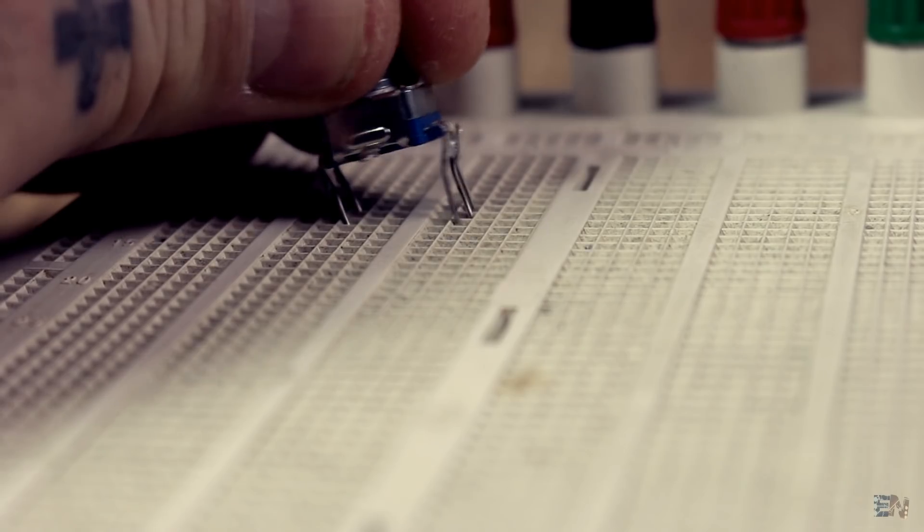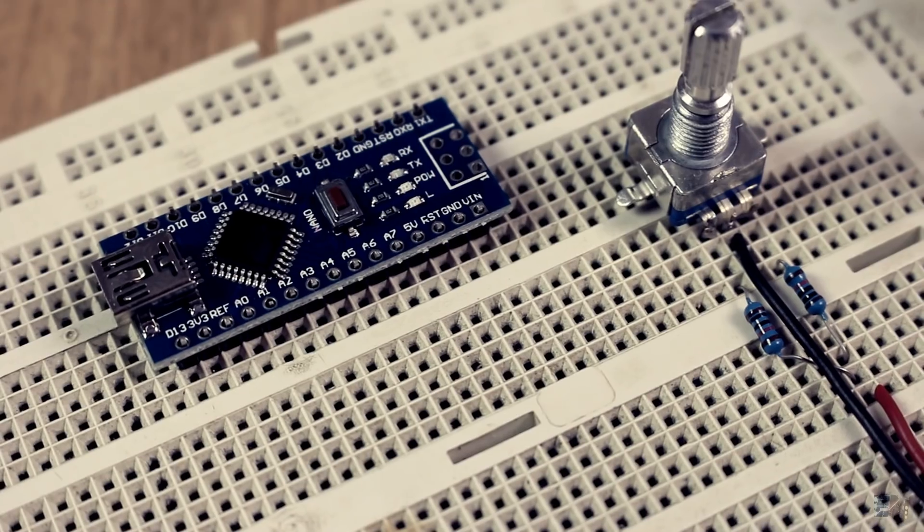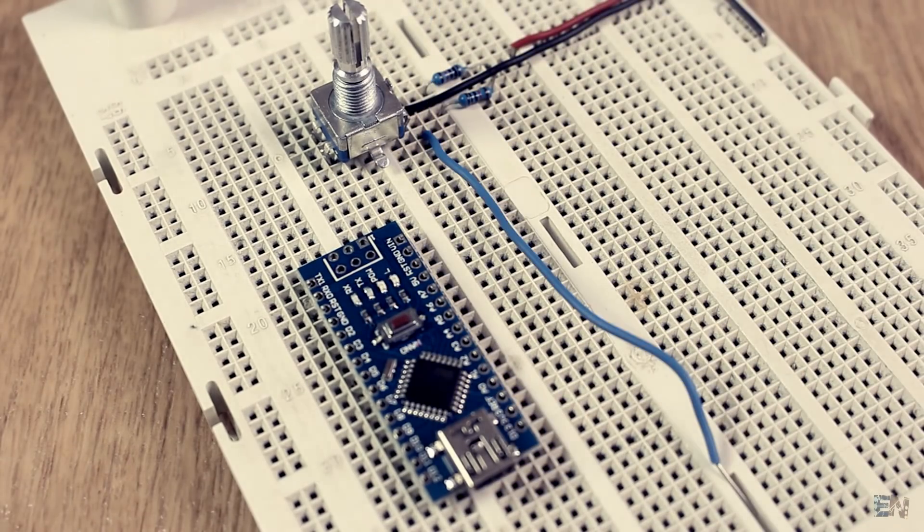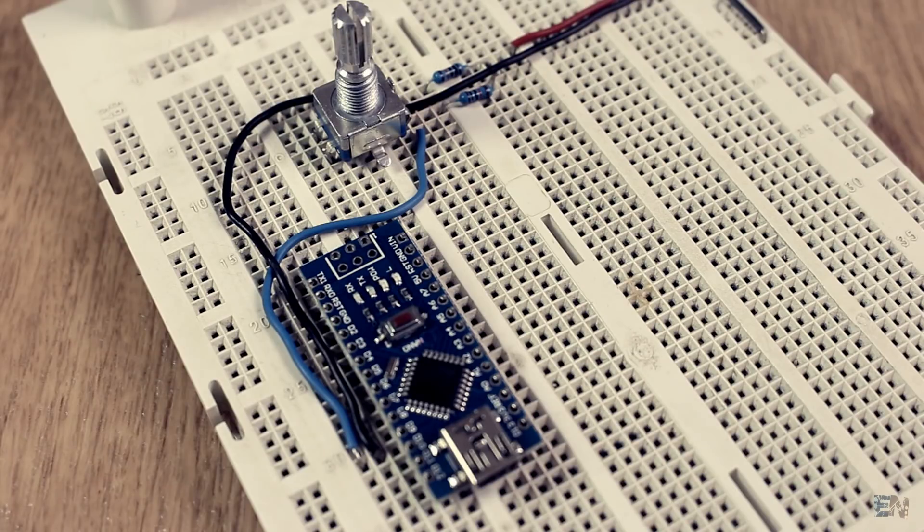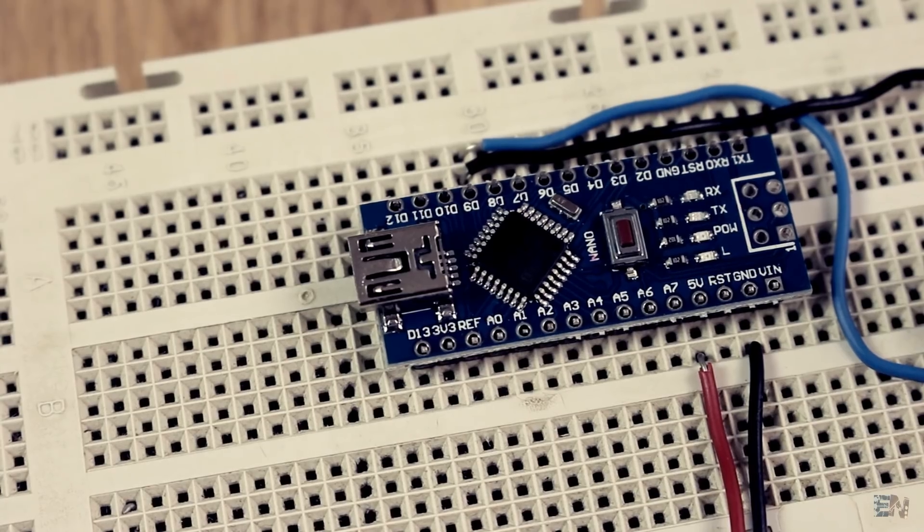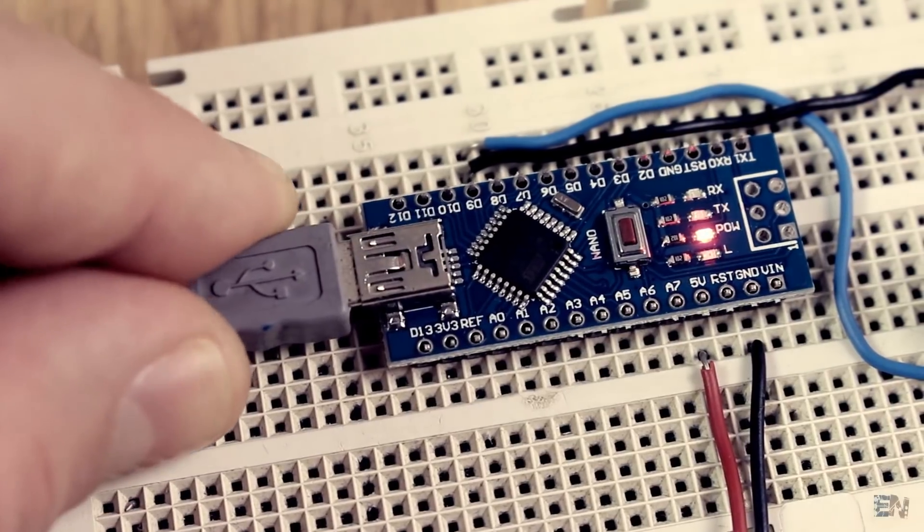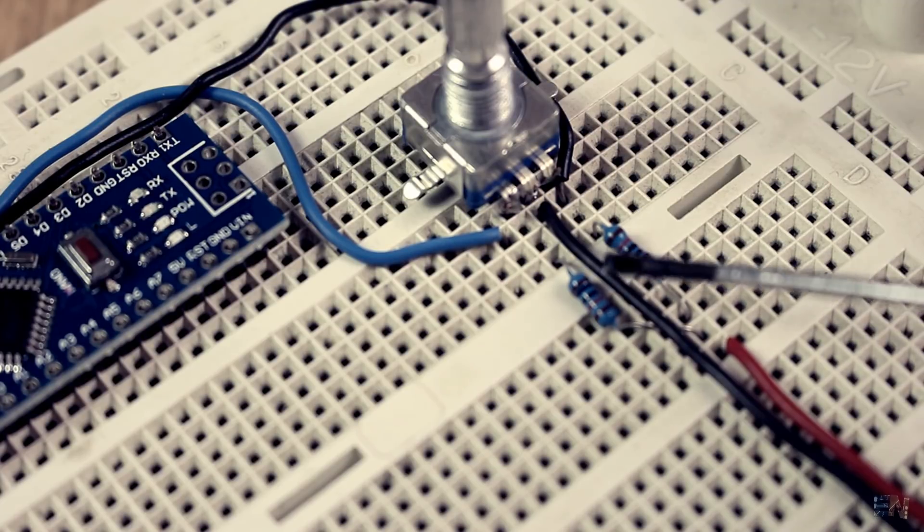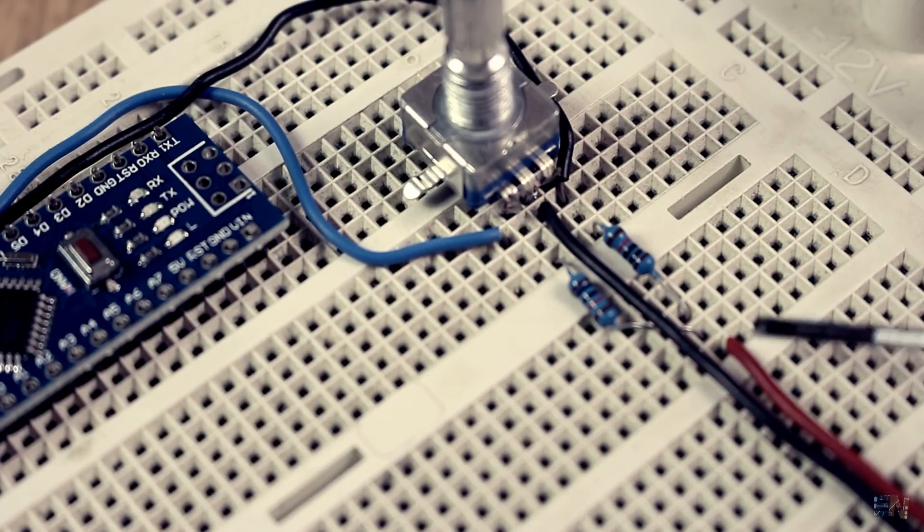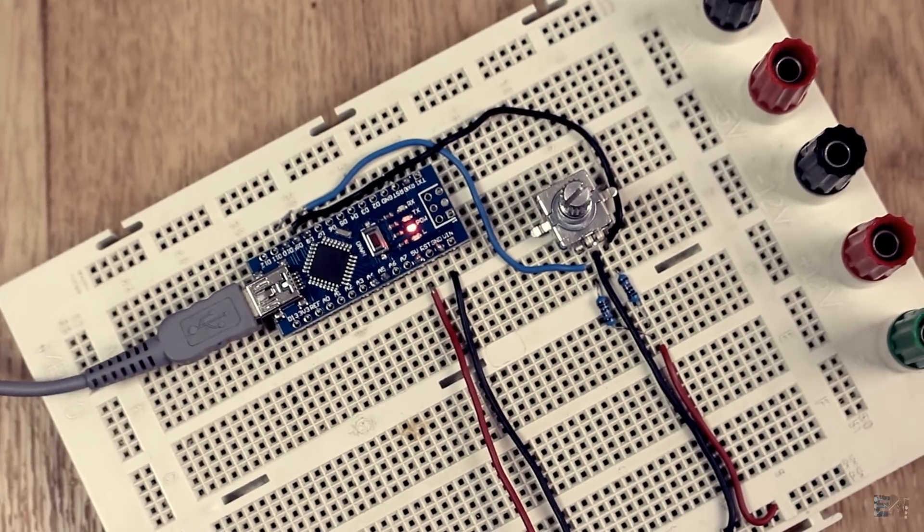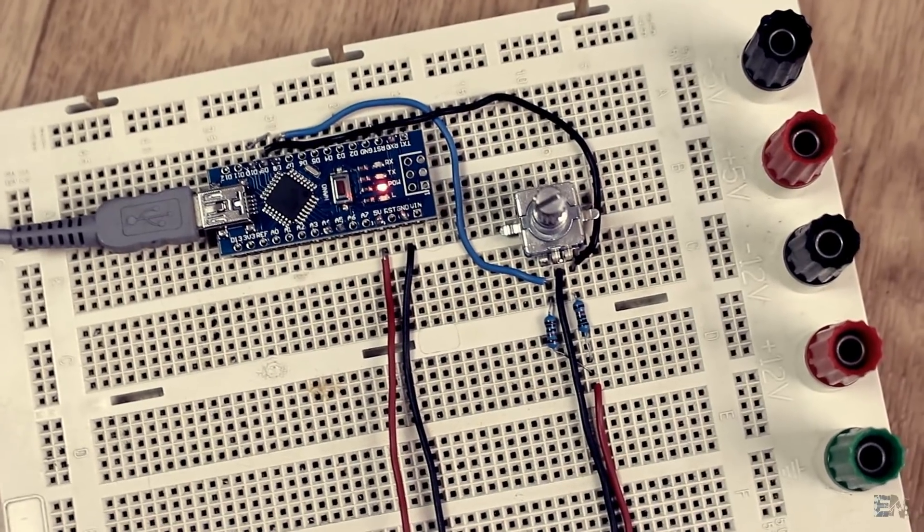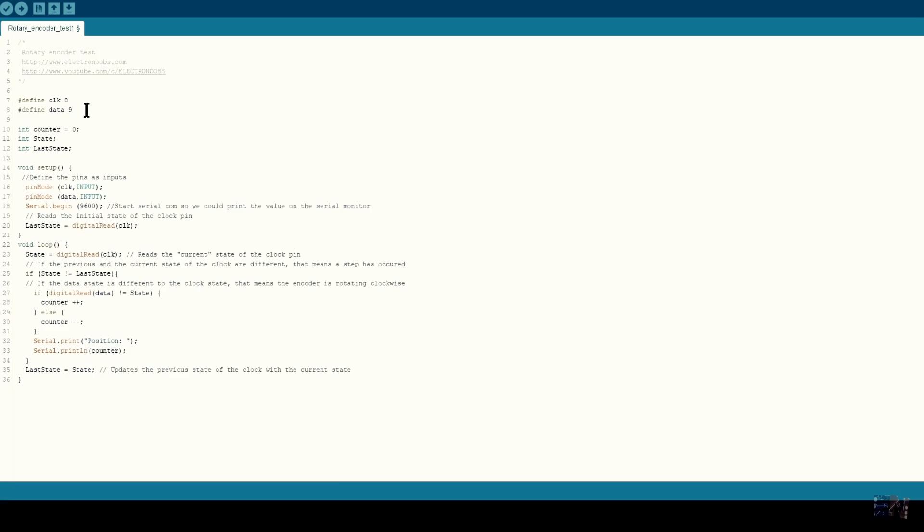So now that we know how this works, let's make the connections to the Arduino and run the first example code of this tutorial. By the way, you have all the codes and example and all the schematics below. So make sure you check the description of this video. So I'll connect the clock pin to digital pin 8 and the data to digital pin 9. Remember to add those pull-up resistors of 10K between each pin and 5V and connect ground to the middle pin of the encoder. We won't connect the push button for this example, only the two pins. Now open this next code and upload it to the Arduino.